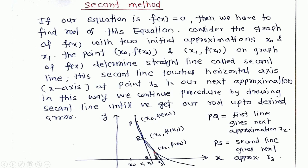In a similar way, we are drawing the secant line passing through the point R, which is x2 comma f of x2. This secant line again touches the x-axis at point x3, which is our next approximation to the root. We will continue this procedure until we get the root to the desired error. The line PQ is the first secant line giving the first approximation x2, and R gives the next approximation x3.